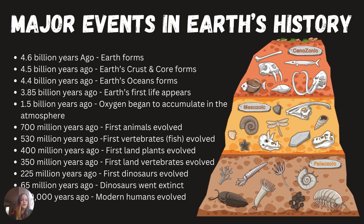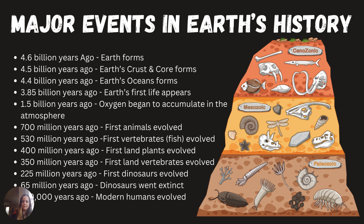Some major events in Earth's history: geologic time goes back 4.6 billion years, so a lot has happened. 4.6 billion years ago, Earth forms. Then the Earth's crust and core form. The oceans form, and 3.8 billion years ago we saw the first life. Then 1.5 billion years ago, oxygen began to accumulate in the atmosphere — that's vital to having animals on land, since we wouldn't have terrestrial animals and plants without it. 700 million years ago we saw the first animals evolve, and the first vertebrates, which were fish, appeared 530 million years ago.